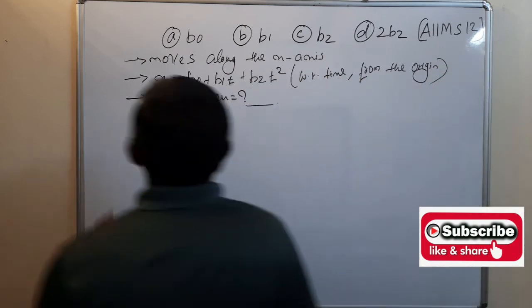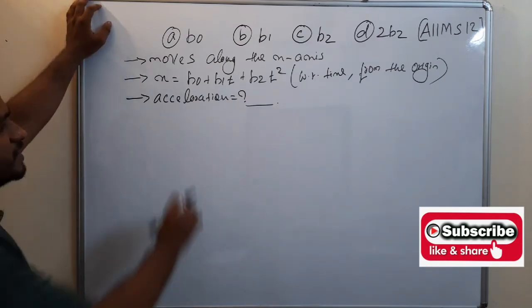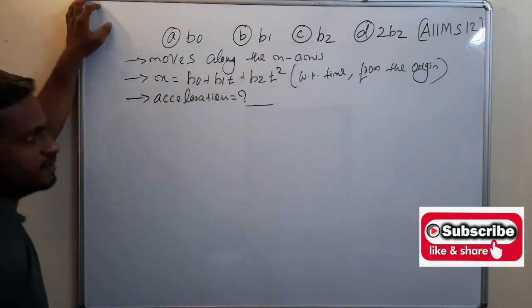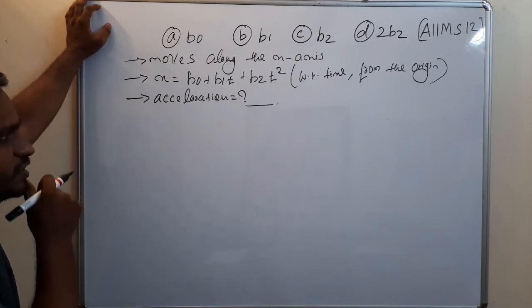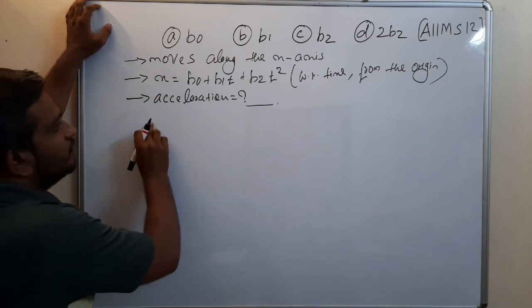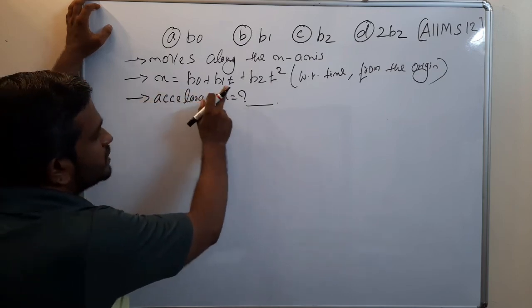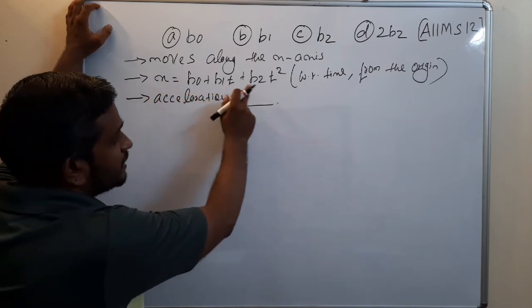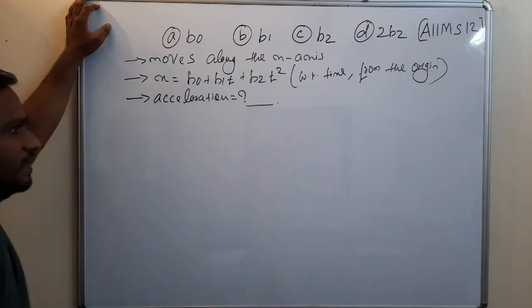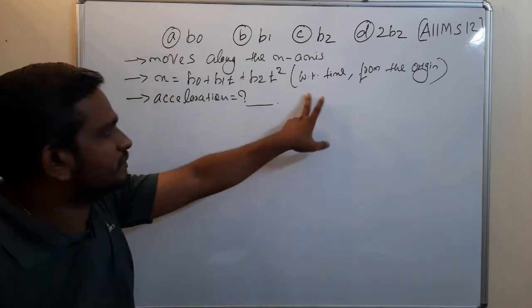What is given in the question: the object moves along the x-axis. The position of the object with respect to time is given by x equals b0 plus b1 t plus b2 t square, with respect to time.